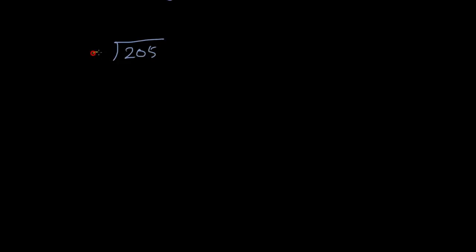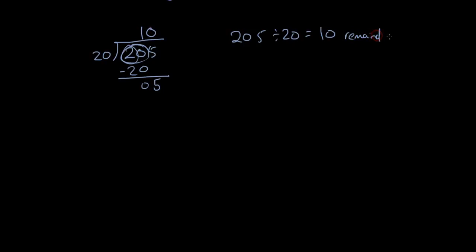Now let's move on to double-digit numbers. Let's do 205 divided by 20. Does 20 fit into 2? No. Look at the next two numbers together: does 20 go into 20? Yes — put 1, because 20 times 1 is 20, leaving nothing. Bring down the 5: does 20 go into 5? No. So the answer is 205 divided by 20 equals 10 remainder 5, or 205 equals 20 times 10 plus 5, because 20 times 10 is 200 plus 5 is 205.